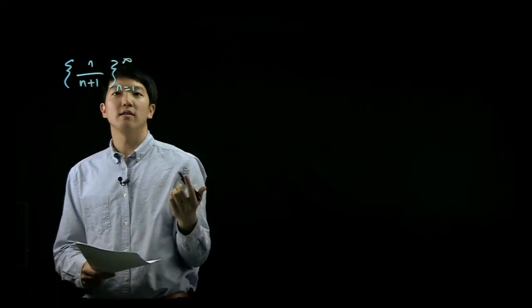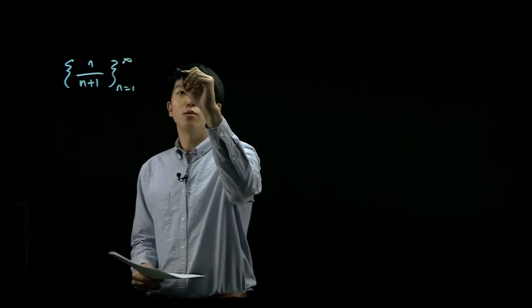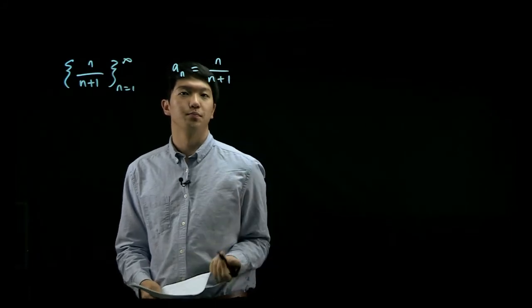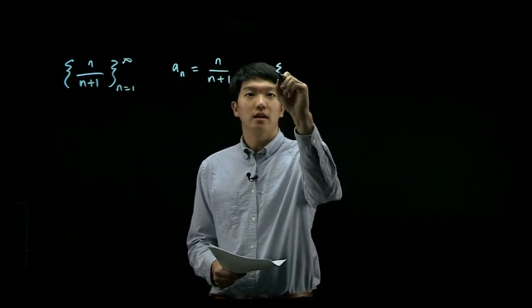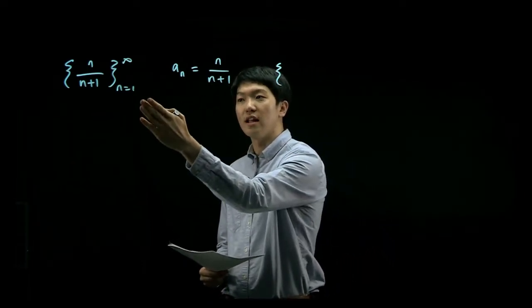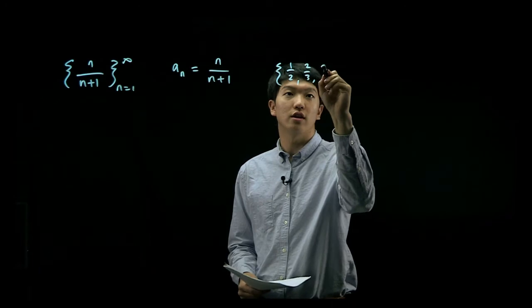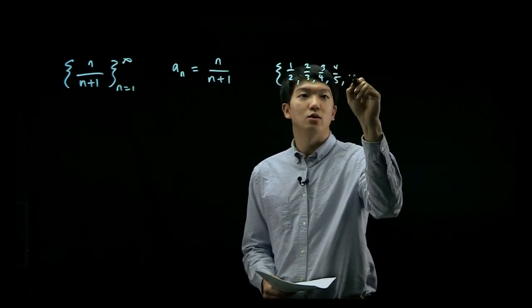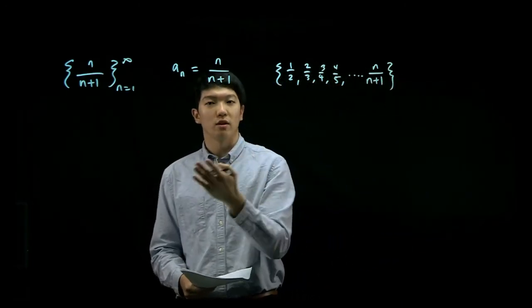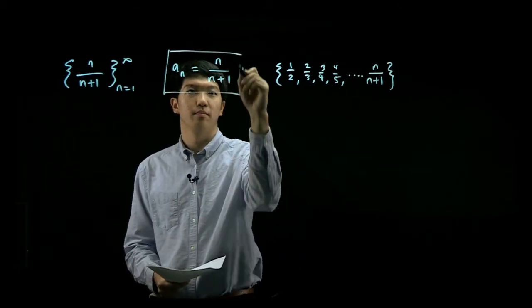One way is to write a sequence with the braces with the starting point and the end point. The other way is just simply writing it as an equals n over n plus one. And the last way starts with the first few terms of the sequence. In this case, when we start with n equals one and move on to two, three, four, what we're going to get is one over two, two over three, three over four, four over five, and so on until we get our general term. So these are the three typical ways. And for the purpose of our lecture, we're going to stick to this method.